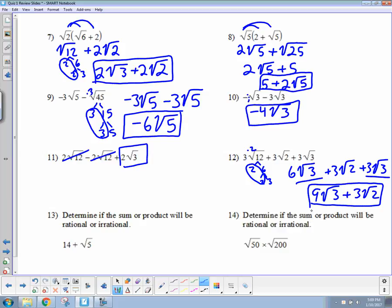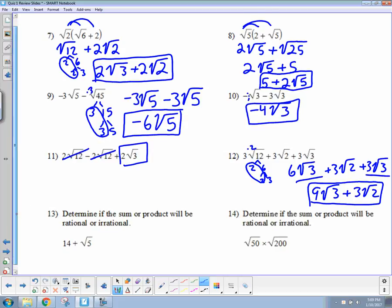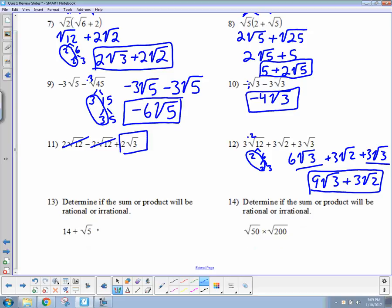All right. Number 13. Determine if the sum or product will be rational or irrational. So 14 plus √5. This is irrational, this is rational. Must be irrational.